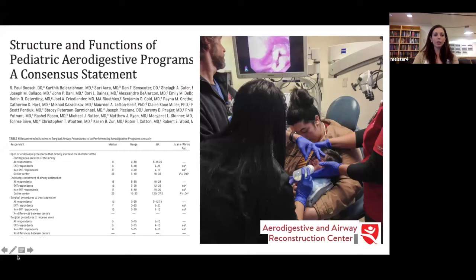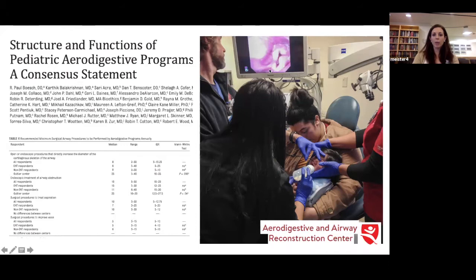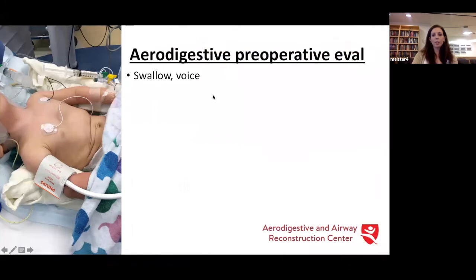Looking at the otolaryngology table extracted from that consensus statement: pediatric otolaryngologists should work on procedures that increase the diameter of the airway, treatment of airway obstruction, treatment for aspiration, and surgical procedures to improve voice. In our clinic, we have speech pathologists who work with us. This is Dr. Seidel performing a functional endoscopic evaluation of swallowing. Rona, our speech pathologist, is feeding the baby while Dr. Seidel gets a view of the voice box, and we're looking for signs of penetration and aspiration as well as the child's anatomy.